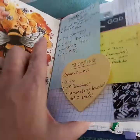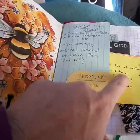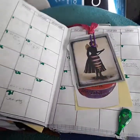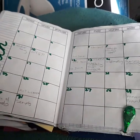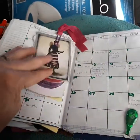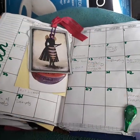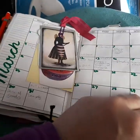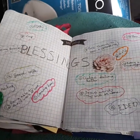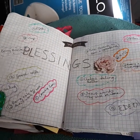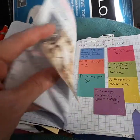You've seen that — that's my dream stuff, shopping list, goals for 2020. Here's March. I write in pencil on the monthly, because things change. My blessings for March — count your blessings, name them one by one.